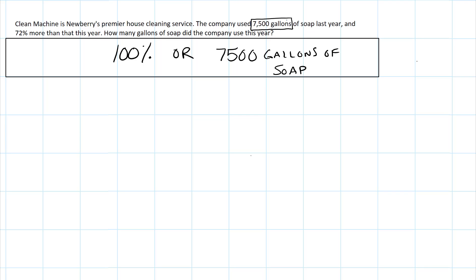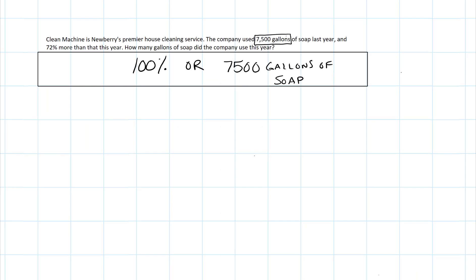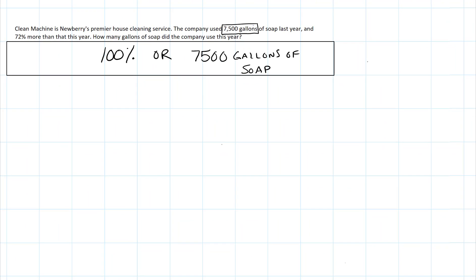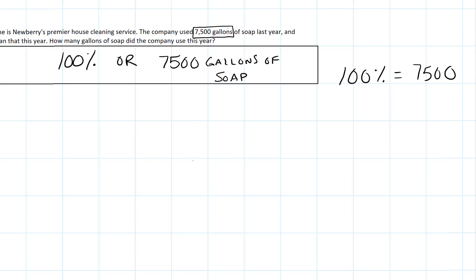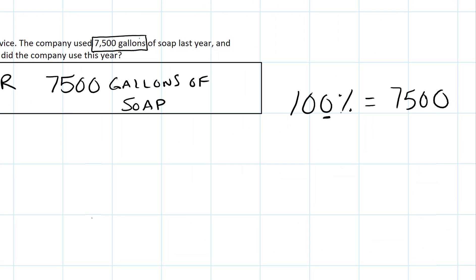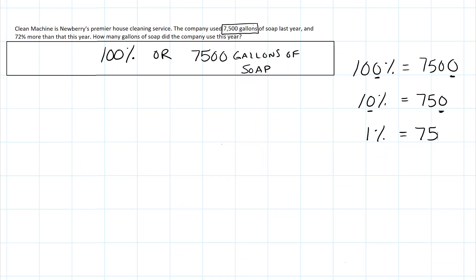Something else that we learned in our rule of 10% video is we learned how to find 10% and 1% of any number very quickly. And we've got to start with knowing 100%. I know that 100% is 7,500 gallons. In order to find 10%, I shrink each of these numbers by one place value. So 10% is going to be 750 gallons. And to find 1%, we again just shrink each number by one place value. So 1% is 75.